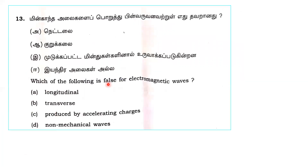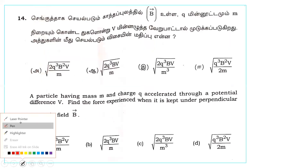Next question: which of the following is false for electromagnetic waves? Electromagnetic waves are transverse waves, produced by accelerating or oscillating charges, and are non-mechanical — they do not require a medium to propagate. The false statement is that electromagnetic waves are longitudinal waves.